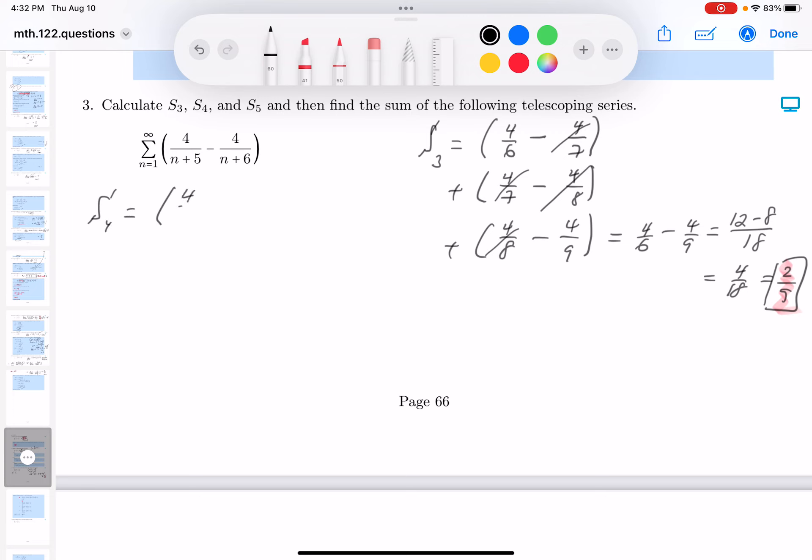And again, I'm going to write it down. 4 sixths minus 4 sevenths, 4 sevenths. Let's see, minus 4 eighths. Don't reduce these things, by the way. 4 eighths minus 4 ninths. And then you get 4 ninths minus 4 tenths.